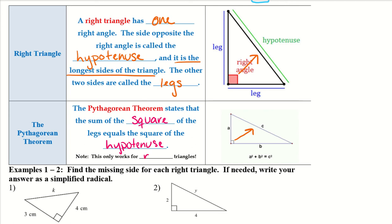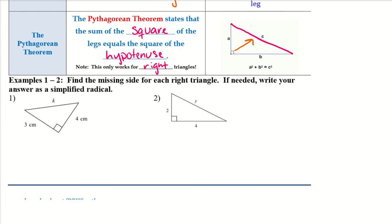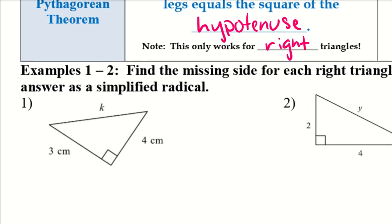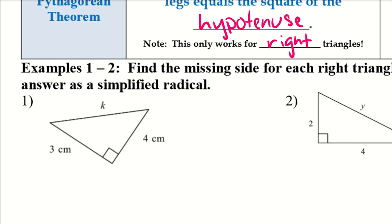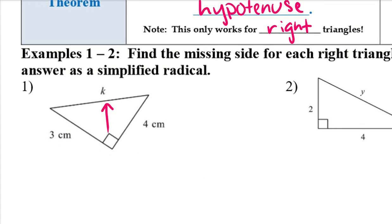This only works for right triangles. We can only use the Pythagorean theorem with right triangles because right triangles are the only triangles that have a hypotenuse. The hypotenuse is opposite the 90-degree angle. Let's go ahead and try a couple of examples. First, we should identify which side is our hypotenuse.